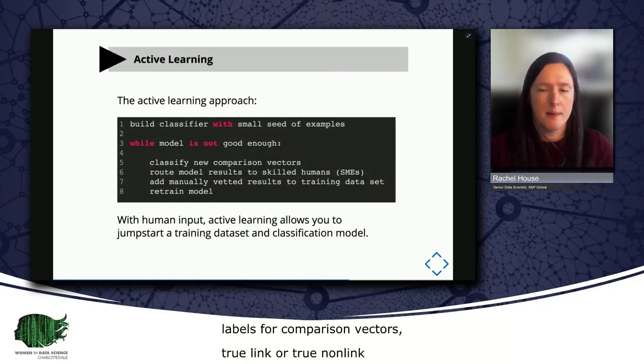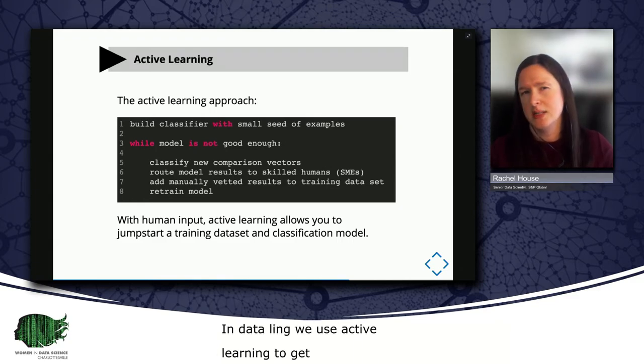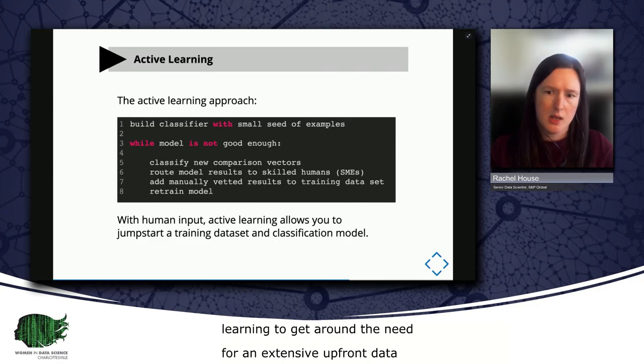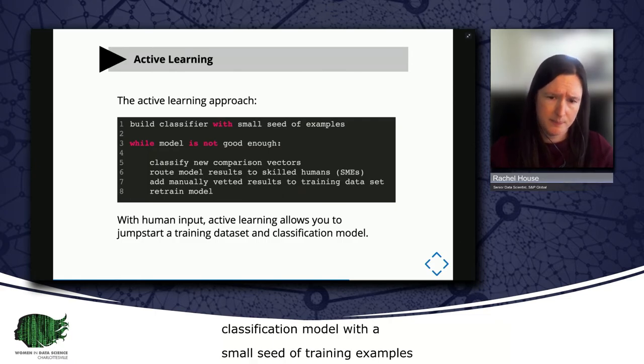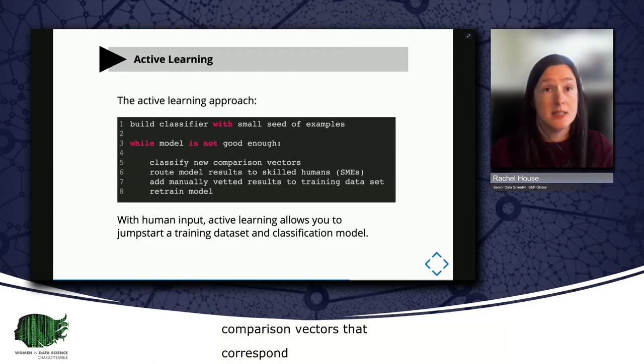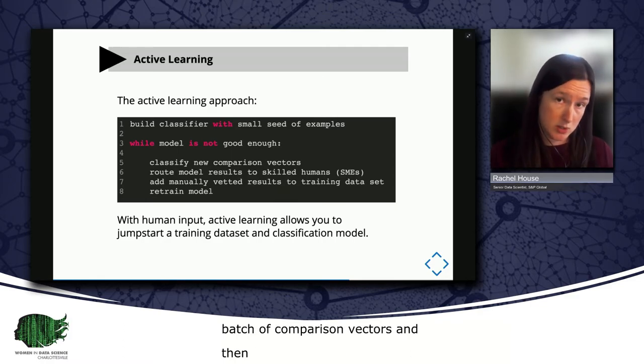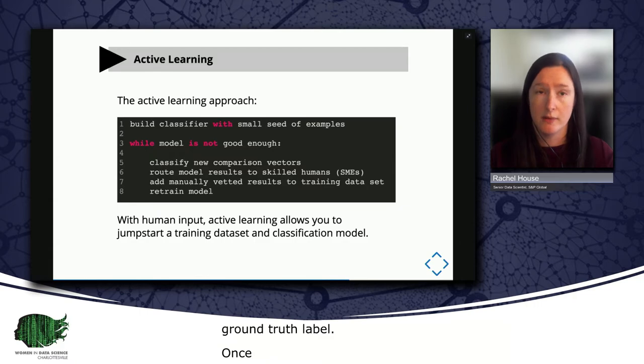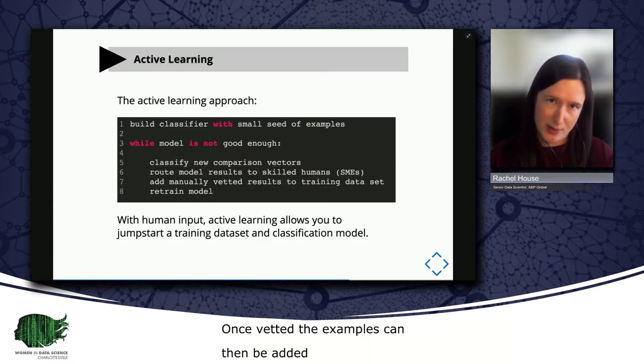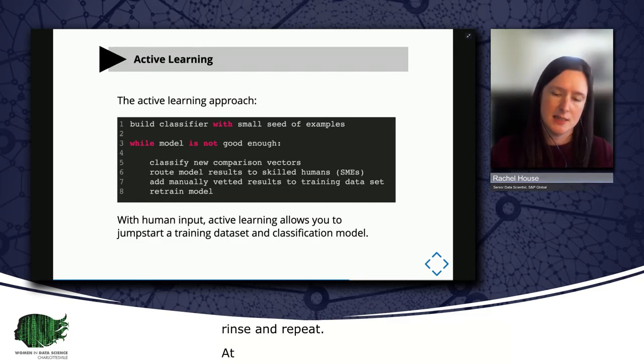In data linking, we commonly use active learning to get around the need for an extensive upfront training dataset. Active learning takes an iterative approach to building a linking model. You start by building your initial classification model with a small seed of training examples, usually a handful of comparison vectors that correspond to clear links and clear non-links. You use that model to classify a new unseen batch of comparison vectors. And then you route those new model results to human subject matter experts who can assign a ground truth label. Once vetted, these examples can then be added to your growing collection of labeled training data. After that, it's pretty much rinse and repeat. At each stage, you evaluate your classification model and keep iterating until it achieves its desired performance.